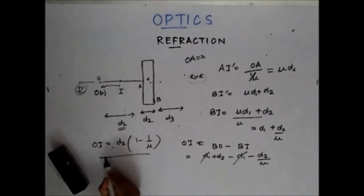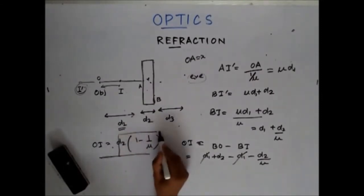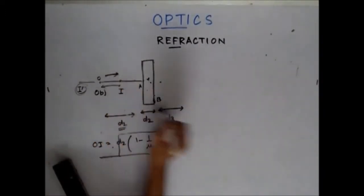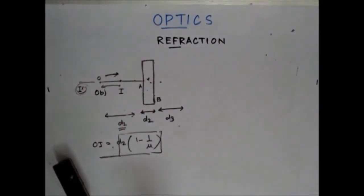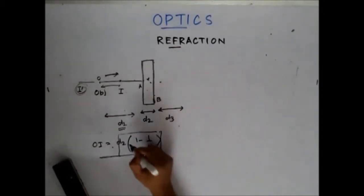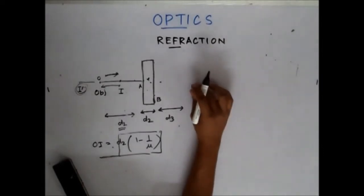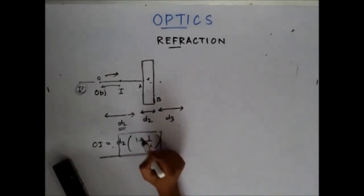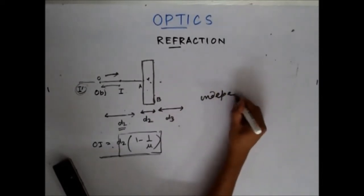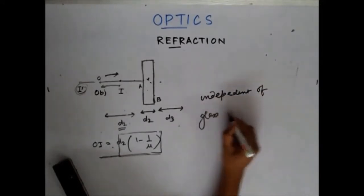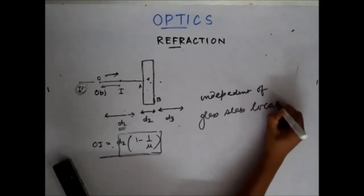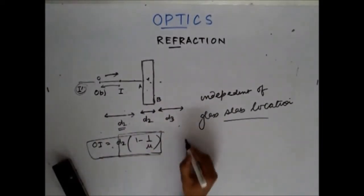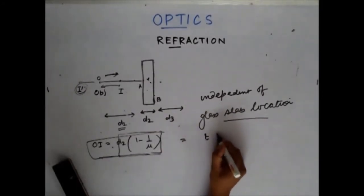The direction of the shift is positive, so the direction of the shift is in the direction in which the ray of light moves. Another important point is that the shift is independent of the location of the glass slab, because the shift d2(1 − 1/mu) does not contain terms like d1 or d3. So wherever I place the glass slab, the shift will be the same: thickness t × (1 − 1/mu).